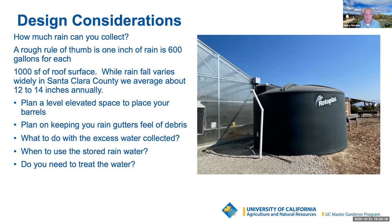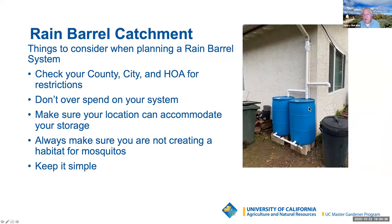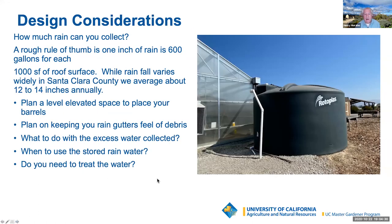How much rain can you collect? A rough rule of thumb is that for every one inch of rain on 1,000 square feet of roof surface, you can capture about 600 gallons of water. As Justin mentioned earlier, this La Niña year means we're going to have sporadic rain if any, and it may not reach our average annual rainfall.